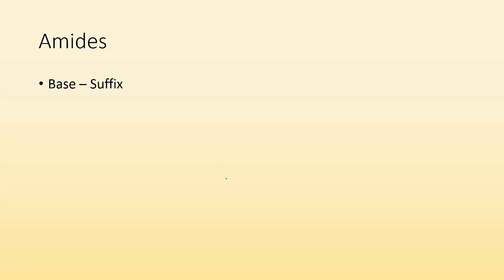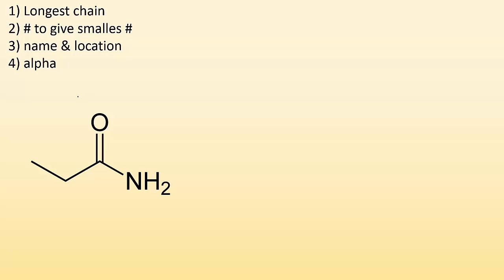All right, amides. Same kind of pattern, base, and then the suffix. This time, the suffix is amide. So, let's take a look. One, two, three, oh, here. There's my amide group. I got the double bond O and the NH2, so I know it's an amide.